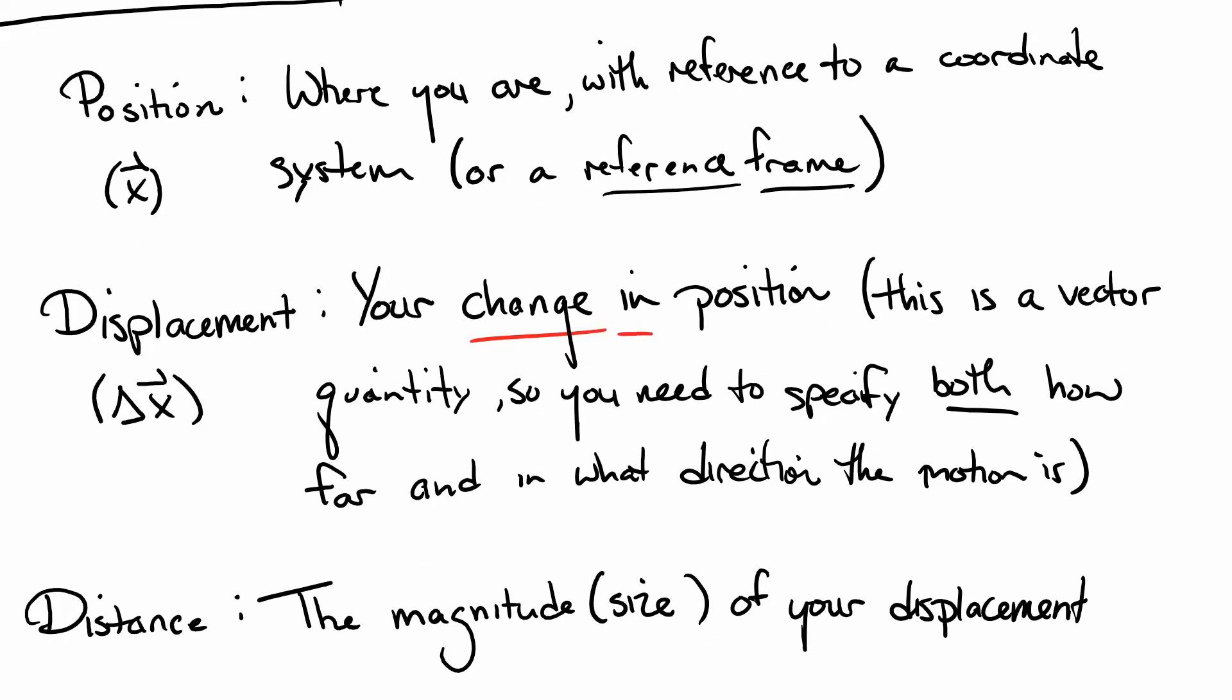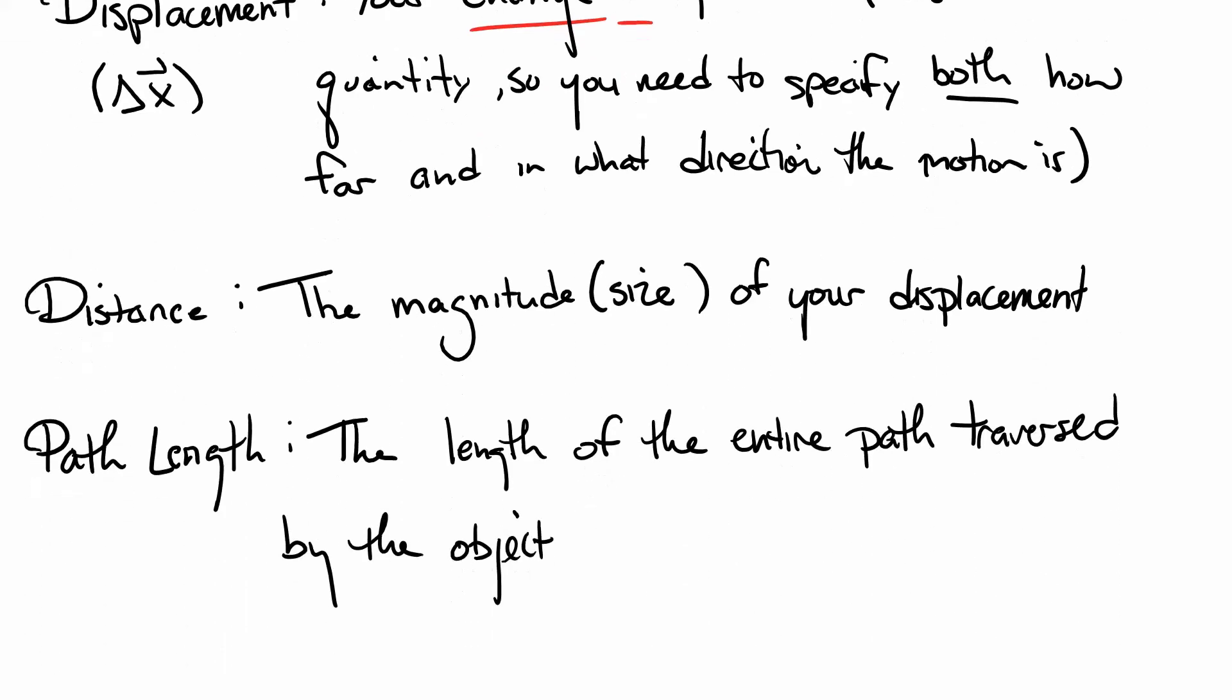Now, the distance of something we're going to think is just the magnitude of your displacement. That's that two meters bit. If I'm two meters inside or two meters outside, that's a displacement. I'm two meters away from the window. Two meters is the distance I am away from the window.